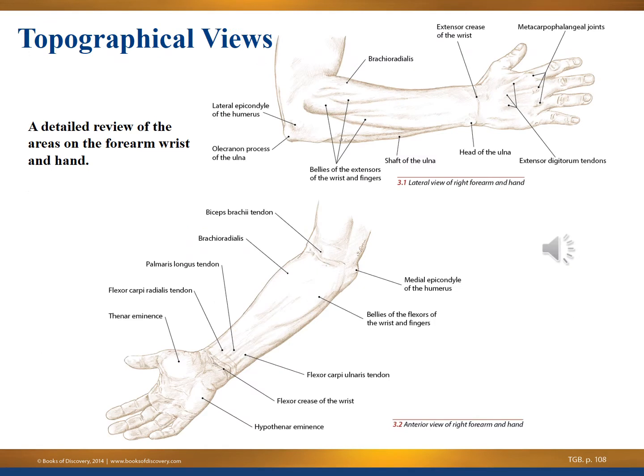On to our topographical view of the forearm, wrist, and hand. The upper picture shows a detailed view of these areas topographically — basically where the brachioradialis would be, the olecranon process of the ulna, and the lateral epicondyle of the humerus. Looking at the lower picture, you'll see the biceps brachii tendon attachment, moving into palmaris longus, flexor carpi radialis, flexors of the forearm and wrist, and the medial epicondyle of the humerus.